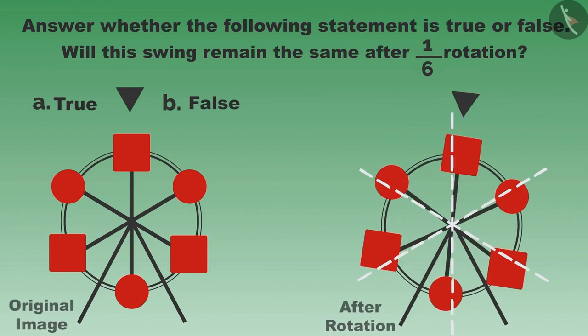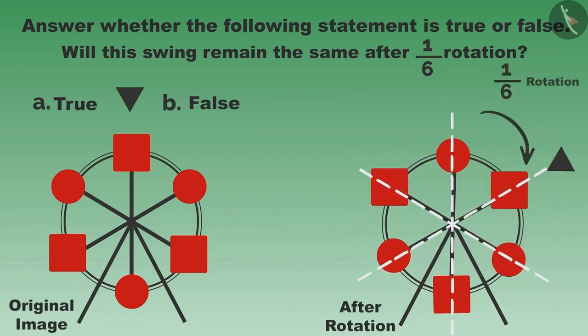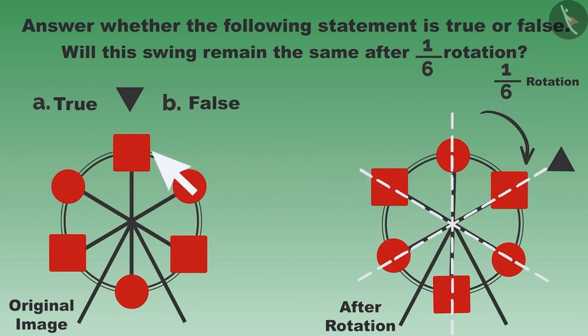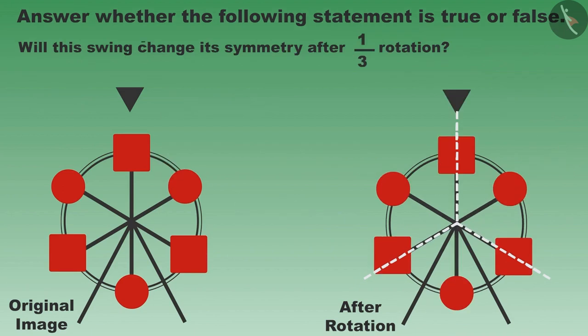This swing does not match with the earlier one after one-sixth rotation. Here you have to focus on the shape of the cabins also. If the shape of the cabin is not the same, then this swing does not match with the earlier one after rotation. Therefore this statement is false.